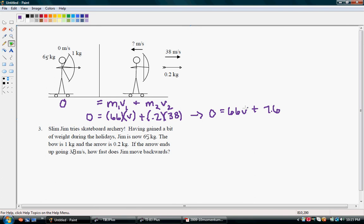So we want to figure out what's the velocity of Jim after he shoots the arrow. So, the first step is to subtract 7.6 from both sides. So we end up with negative 7.6 on the left side equals 66 times the velocity on the right side.